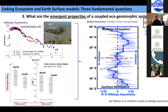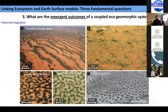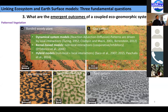Another emergent property at the smaller pattern scale is patterned vegetation. This includes banded woody plants, gap patterns, labyrinthine patterns, and spot patterns. An interesting observation in the literature is that the models developed to study these patterns are very different from eco-hydrology models and dynamic vegetation models. Ecologists have used dynamical system models including reaction-advection-diffusion models going all the way back to Turing's initial work, kernel-based models, and hybrid models.